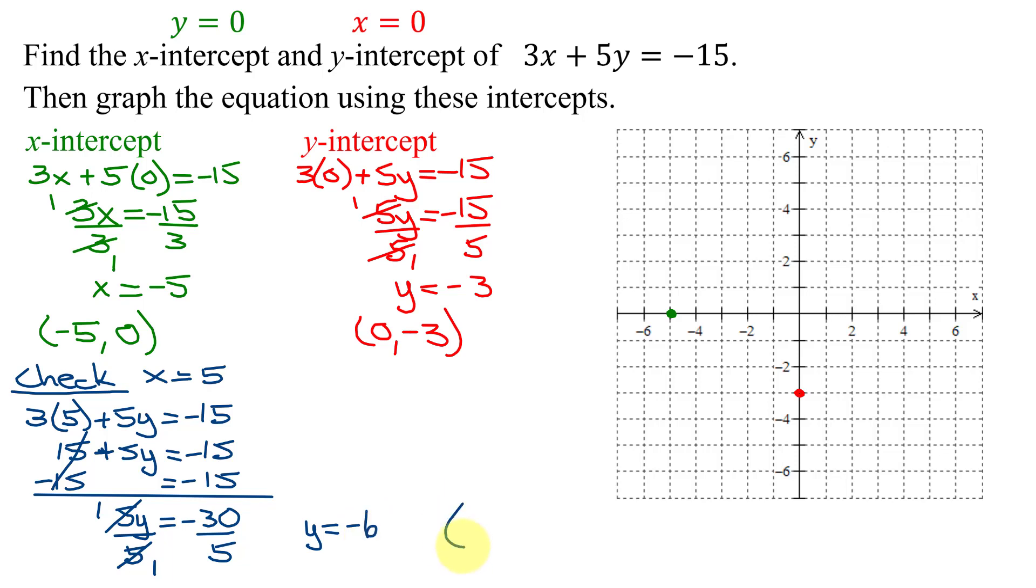So my checkpoint, x is 5, and y is negative 6. So graphing that point, x is 5, y is negative 6 is down there.